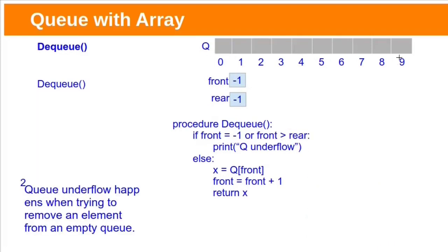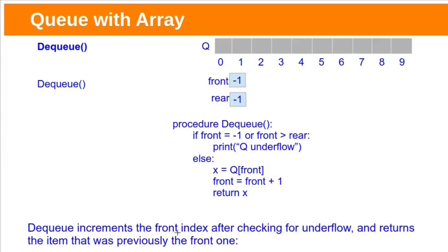Another situation is when no elements have been added to the queue yet — in this case Front will be minus 1. So the second underflow condition is Front equals minus 1. Dequeue increments the Front index after checking for the underflow condition, and returns the item that was previously at the front — meaning before incrementing Front, whatever element is at Front will be returned.